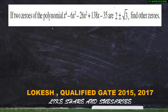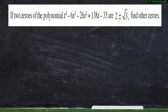For this type of question, two roots are given. The two roots are 2 + √3 and 2 - √3. So 2 + √3 is one root and 2 - √3 is another root.